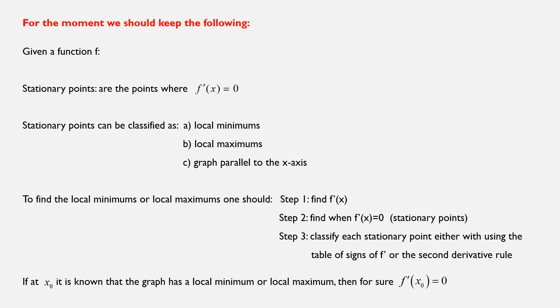For the moment, we should keep the following. Given a function f, first of all, we need to know what stationary points are. They are the points where f'(x) is equal to 0. So if we are asked to find the stationary points, that's all we're going to do. We will calculate the derivative of f, we will make that equal to 0, and we will simply solve that expression.